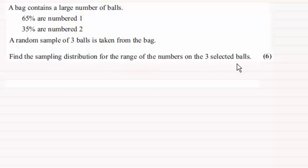Let R be the random variable - RV for short - and it's going to be the range. What I want to do next is put down the three numbers that we could find when we select the three balls from the bag.